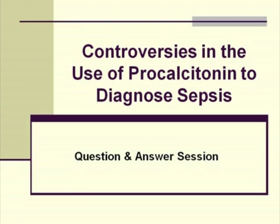But for older children in the pulmonary intensive care unit, we use the same cutoff as we do at Stanford for the adult patients in the intensive care unit, which is 0.5. Here's another question that I thought was really interesting: how did you actually bring the test into your facility? What was the process you went through?